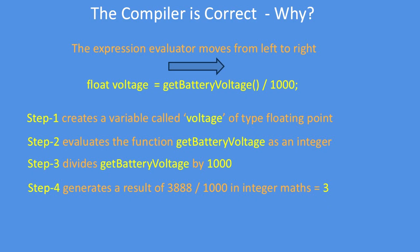Then step three is to divide battery voltage by 1000, and then finally step four it generates a result of 3888 divided by 1000, which in integer math equals three remainder 888.